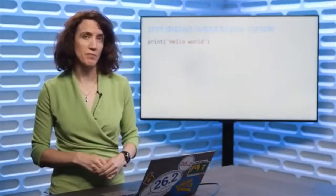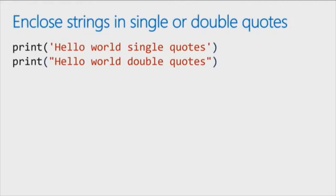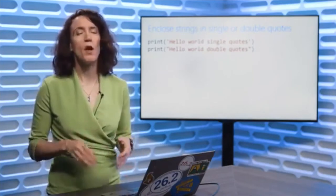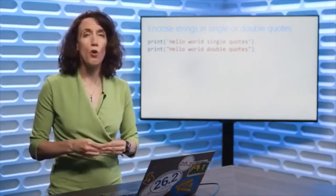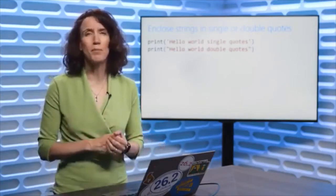Let's get into some coding. We're going to start off with the print statement, which is typically where we start with most programming languages. When you want to print output to the console — to display a message to a user or to yourself for debugging — we use the print statement in Python. It's simply the command print, then in parentheses the string or message you want to display. You can contain it in single quotes, or it will also work inside double quotes. You can choose either, but pick one and stick to it. Throughout this course, we're always going to use single quotes to enclose our strings.